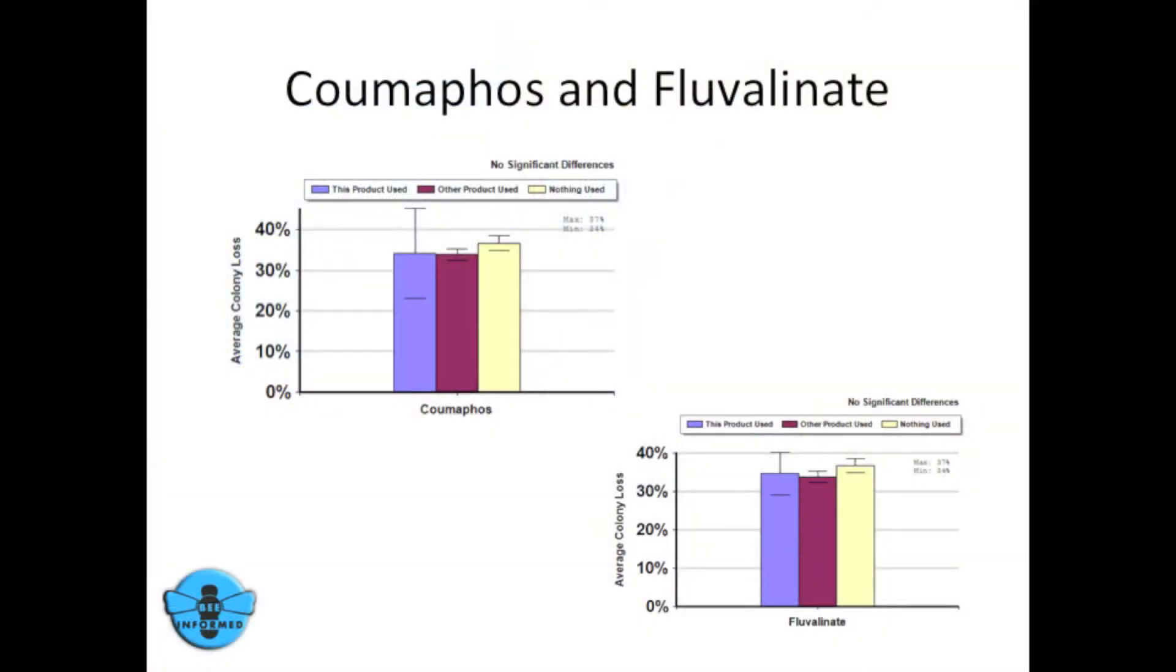Coumaphos, fluvalinate, and fluvalinat are synthetic miticides. We know that there are mites resistant to these products across the country, which may explain why people who reported using these products did not lose fewer or more colonies than those who used another known varroa mite control product or did not use any at all.